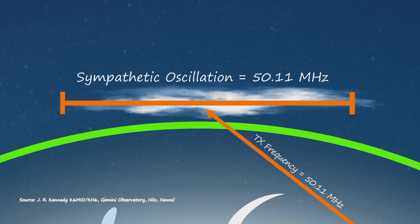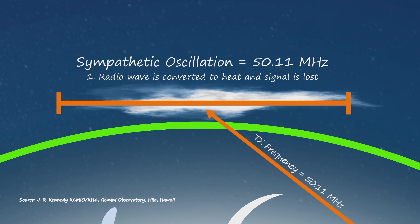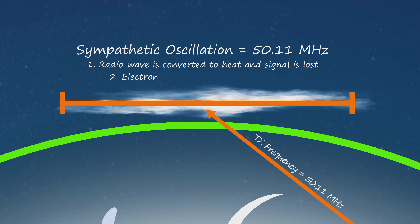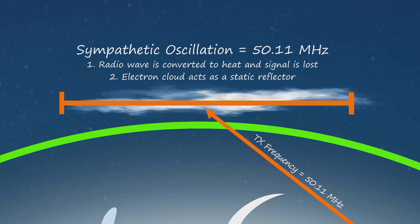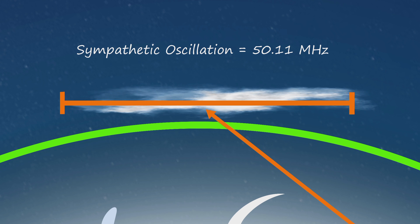At this point, two things can happen. The radio wave is absorbed as heat and the signal is lost, or if certain conditions are met, the cloud of electrons can act more like a static reflector.